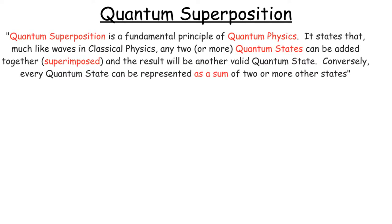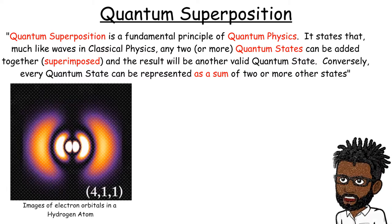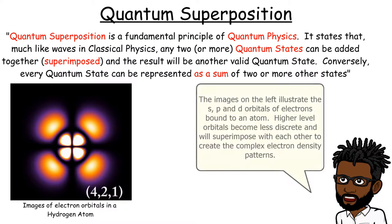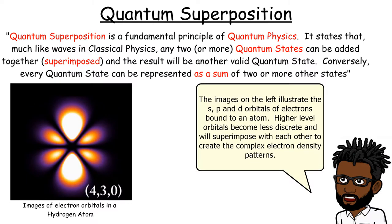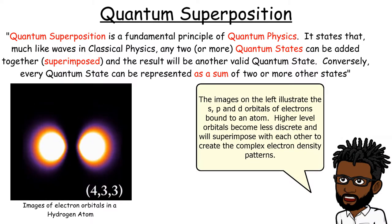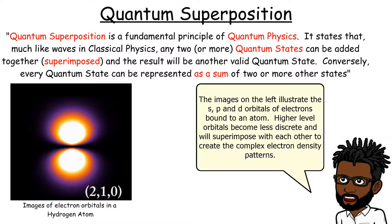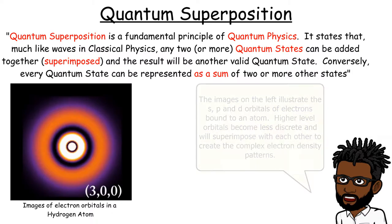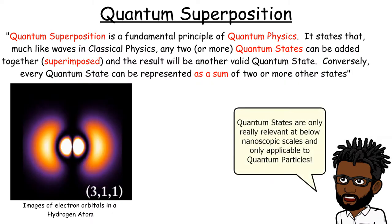Building on from normal wave superposition, quantum superposition follows the same principles, in that any two or more quantum states can be added together, and the result will be another valid quantum state. Conversely, every quantum state can be represented as a sum of two or more other states, such as the electron orbitals in the hydrogen atom, where the higher energy orbitals become less discrete and will superimpose to create these complex patterns that you see.